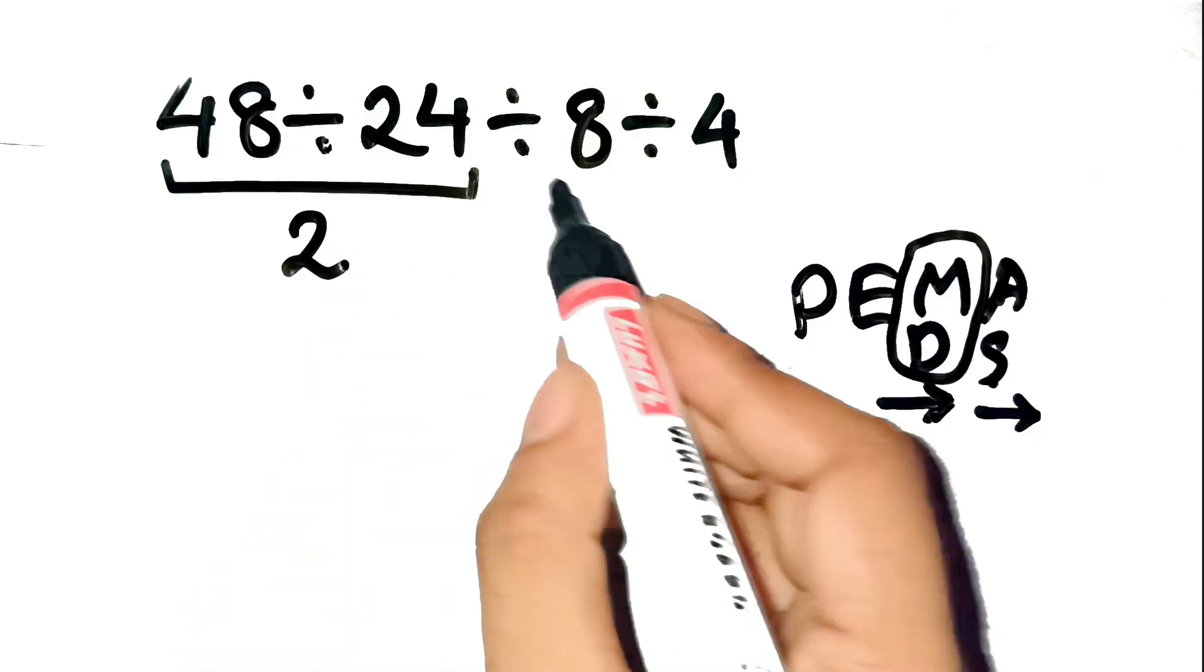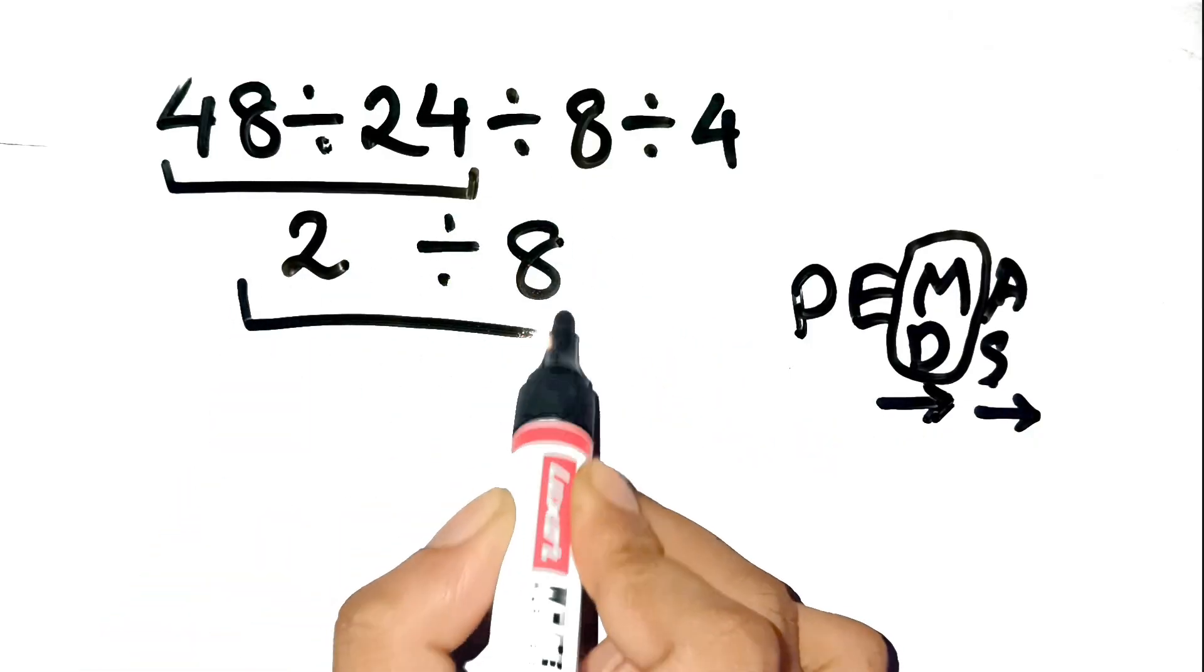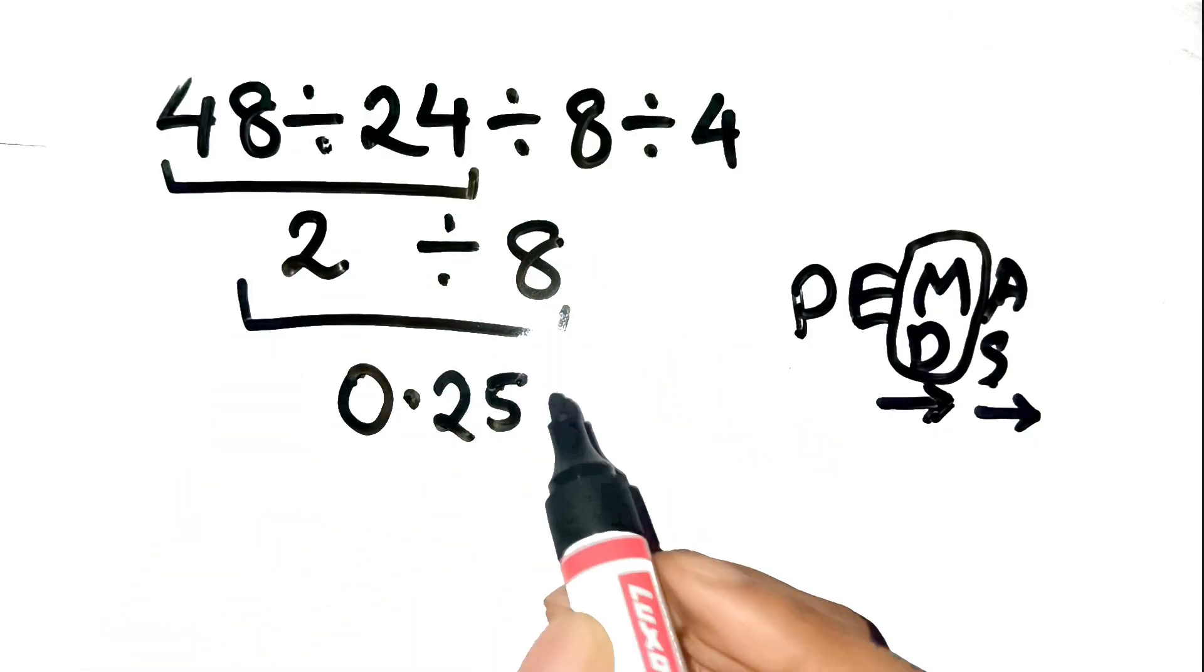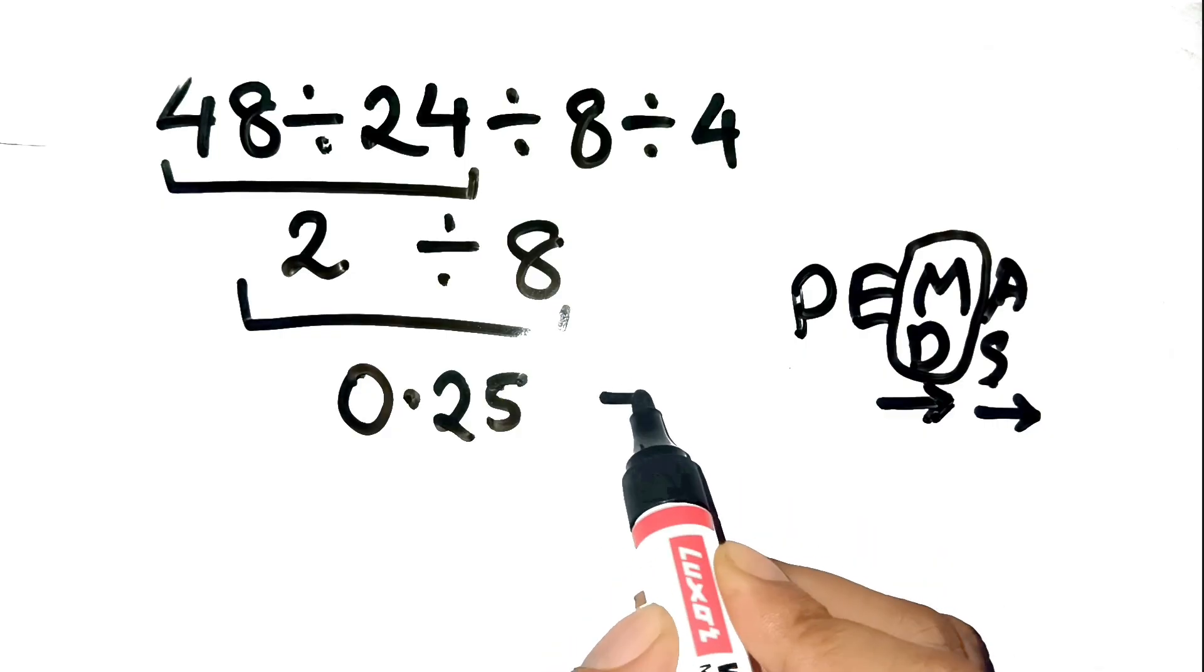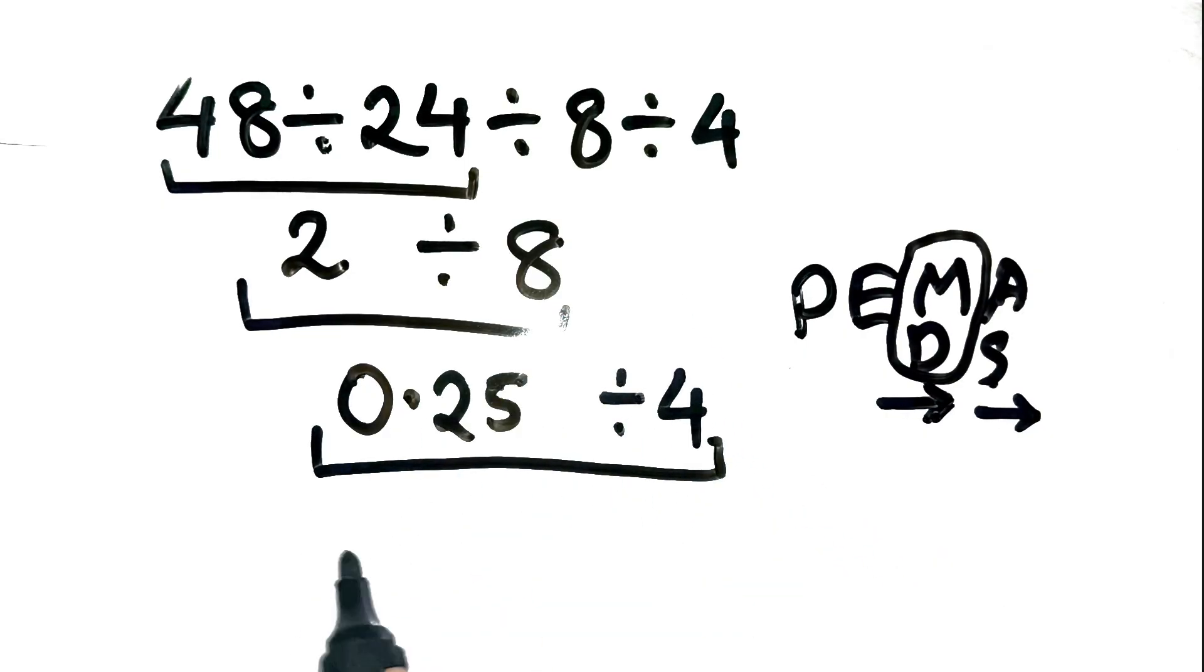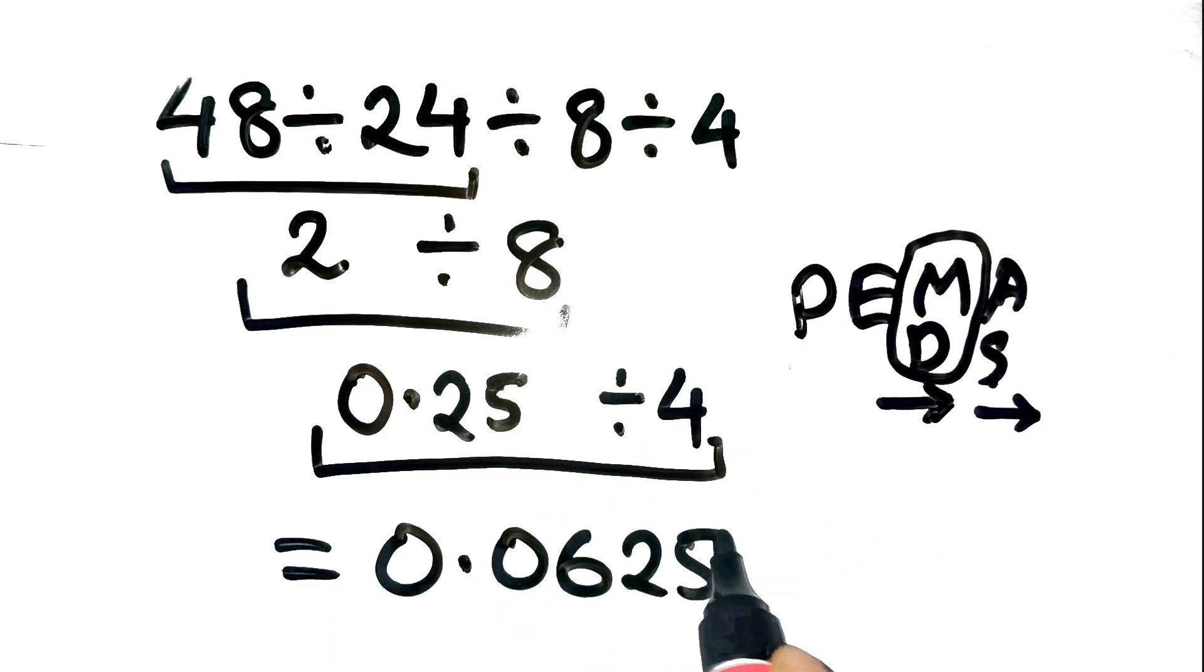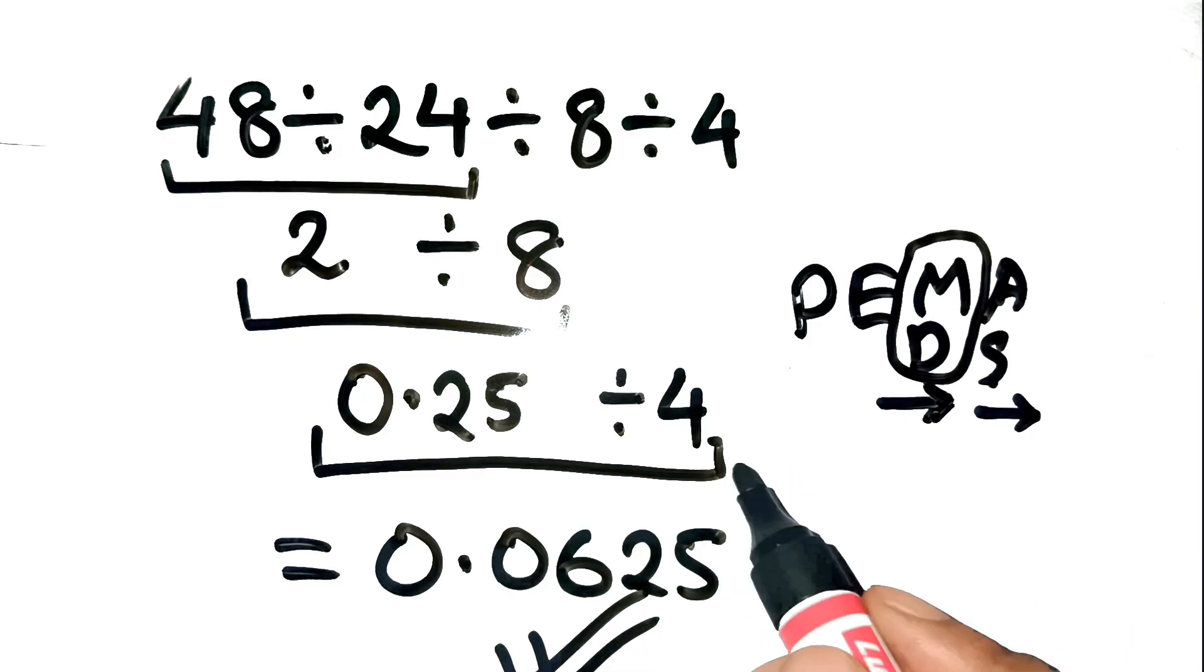Step 2: Take that result and divide by 8. 2 divided by 8 equals 0.25. Step 3: Now divide that by 4. 0.25 divided by 4 equals 0.0625. So the correct answer is 0.0625, not 1.